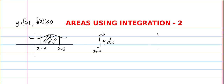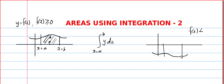And if the curve is negative — I mean if the function gives negative values, that means if the curve goes below the x-axis — then all you have to do is use the same formula but put modulus, so that the area value remains positive.